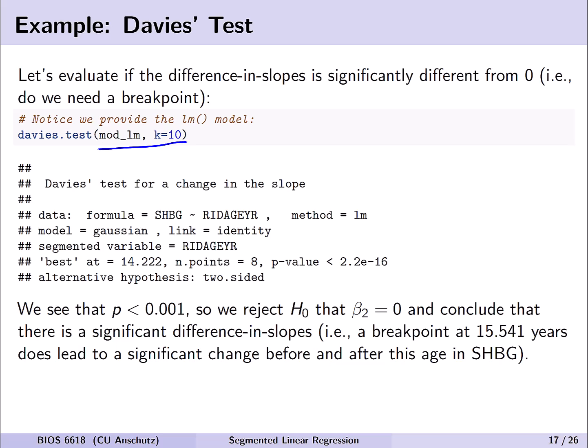The result shows a very small p-value of less than 0.001, so we reject the null hypothesis that beta 2 equals zero and conclude there is a significant difference in slopes — a breakpoint at approximately 15.541 years does lead to a significant change in SHBG trends before and after this age. Note that Davies' approach has its own best location for the breakpoint, but for all further analyses we use the estimated breakpoint from the segmented object.